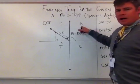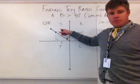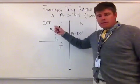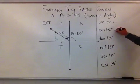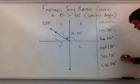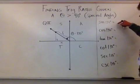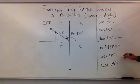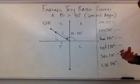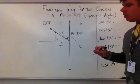In quadrant 2, using 'All Students Take Calculus': all trig ratios are positive in Q1, only sine and its reciprocal cosecant are positive in Q2, and every other function is negative. So before calculating any value, I can assign signs: sine is positive, cosine is negative, tangent is negative, cotangent is negative, secant is negative, and cosecant is positive. Right now I've already established that four of my functions are negative — that's a good start.